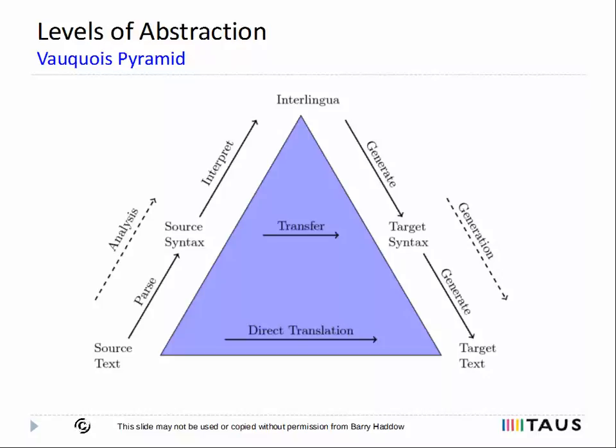At the top of the pyramid is interlingua. The idea of this is that every language can be analyzed into a common semantic language, then the syntax, and finally the text generated in the target language from the interlingua. Interlinguas are not used much in data-driven approaches — they really apply to rule-based approaches. However, like all models, we must remember that the vocab pyramid is a simplification. And many of the current syntactic approaches don't fit easily into this model. For example, they may take the surface form of the source language and generate target syntax and target language directly from this at the same time.